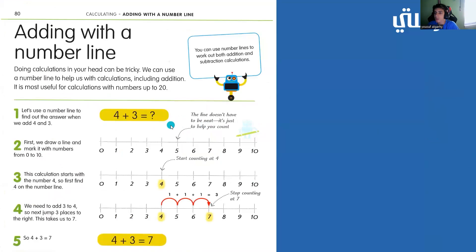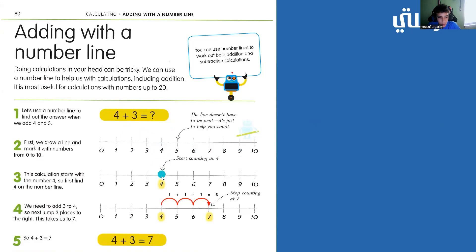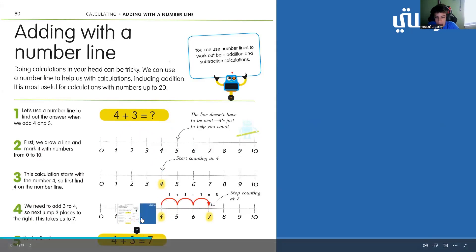All right, now we're going to talk about adding with a number line. Adding with a number line is very simple. Here we have a number line, and we have the equation 4 plus 3. To add 4 plus 3 on a number line, first let's find 4 on the number line — here's 4. We want to add 3, so we jump forward 3 times: 1, 2, 3. So, 4 plus 3 equals 7.